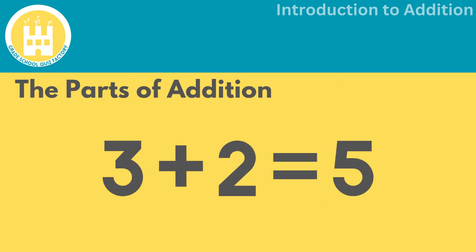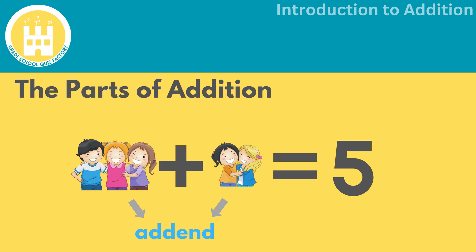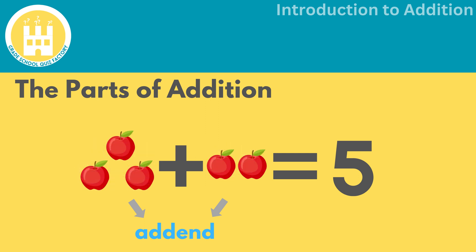These are the parts of an addition operation. Let's delve into each one. First we have the numbers we need to add called addends. These numbers can represent anything like apples, toys, or even friends. For example, if we have three apples in one group and two apples in another group, we want to add them together.